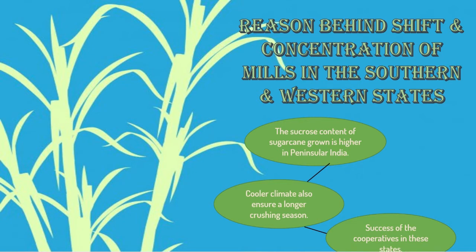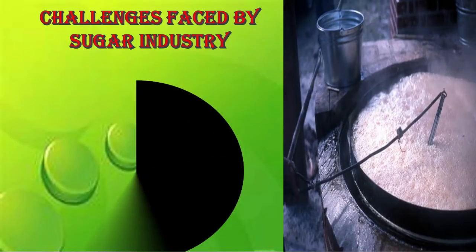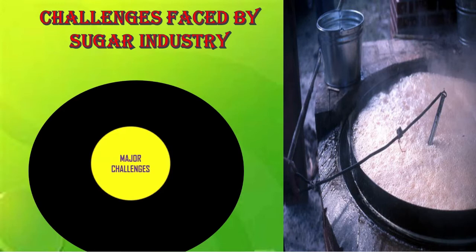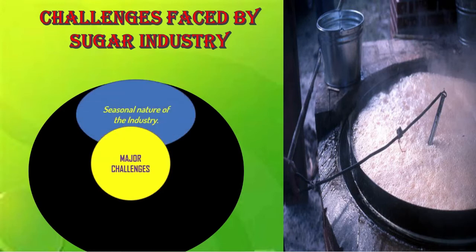Now let us look at the challenges faced by the sugar industry. The major challenge is that it is a seasonal industry, because sugarcane is harvested only in a particular season. Sugar mills are operational only during the crushing season, which means they employ people for only a few months in a year.